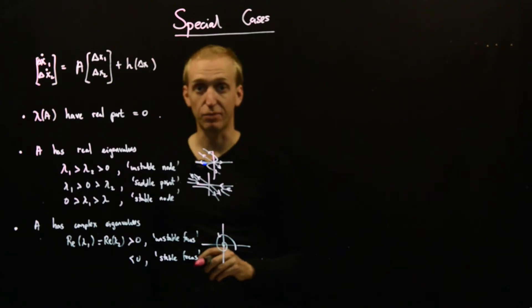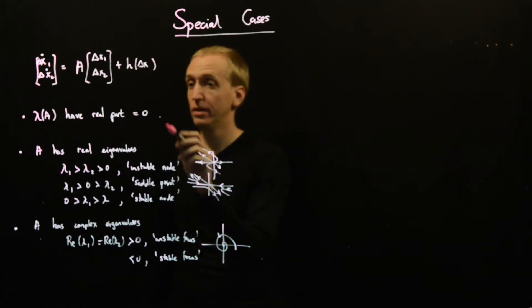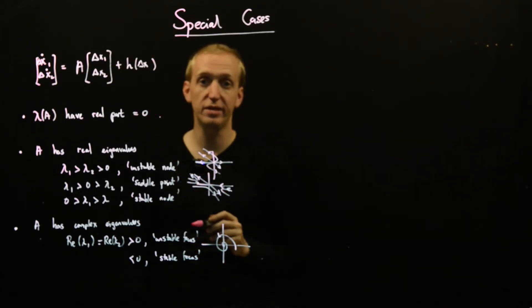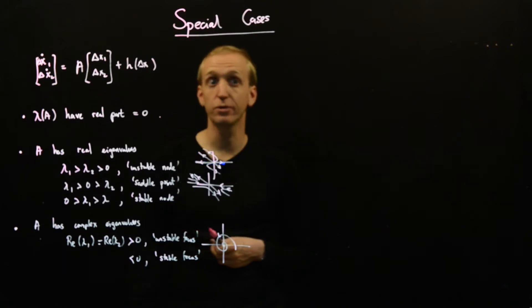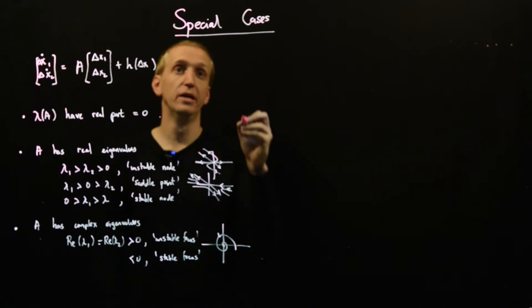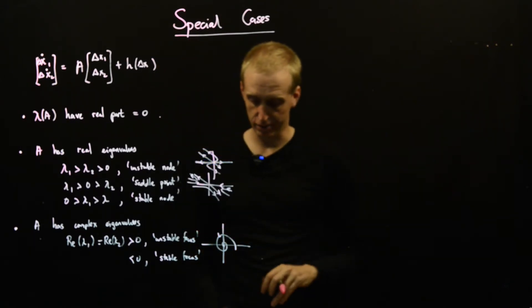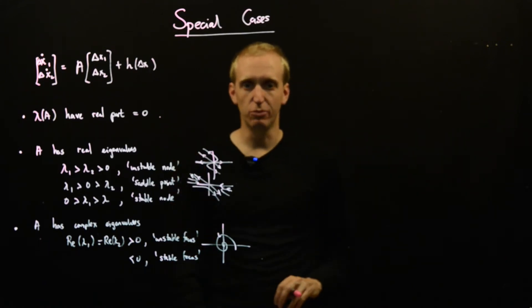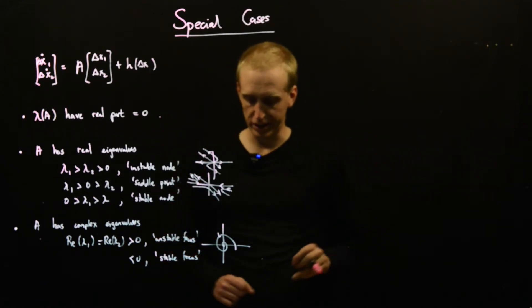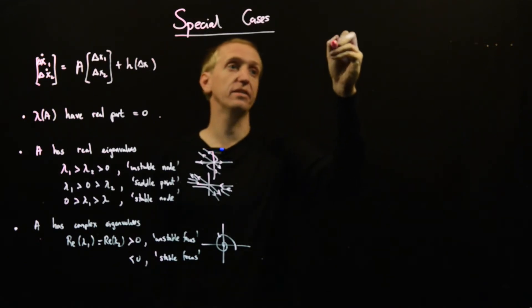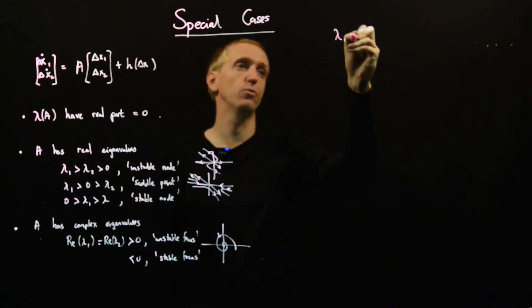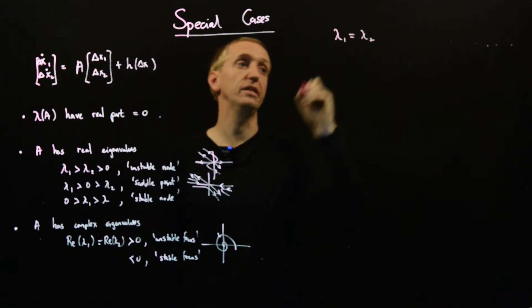So what's left? What have we missed? Well, we can't deal with the zero real parts yet, but what about repeated eigenvalues? And that's what we're going to talk about now. So we've got two cases, and this type of analysis is always really annoying. So we've got two cases to consider. These are the cases for lambda 1 is equal to lambda 2.